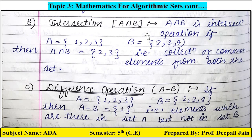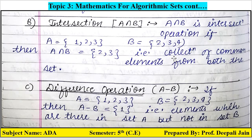Second operation is intersection. A ∩ B — intersection is just opposite to union. If A = {1, 2, 3} and the second set is {2, 3, 4}, then A ∩ B is the collection of common elements from both the sets.